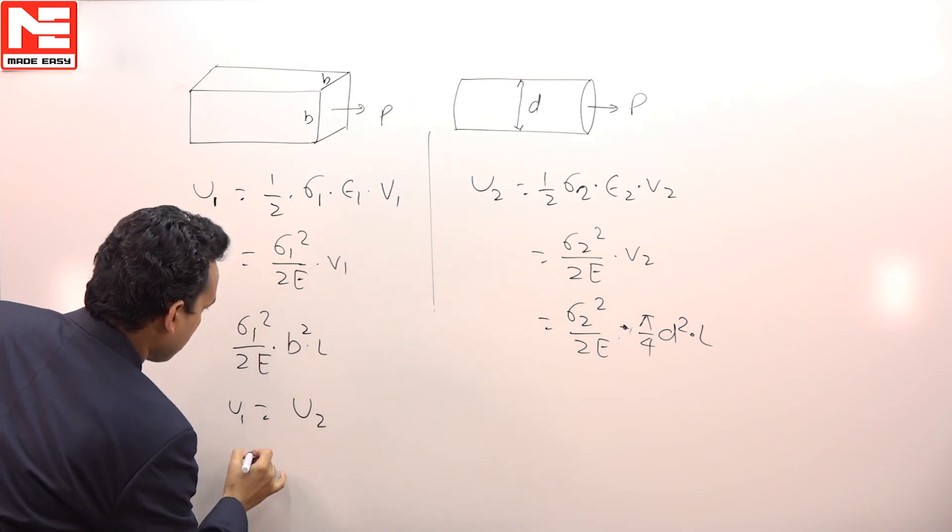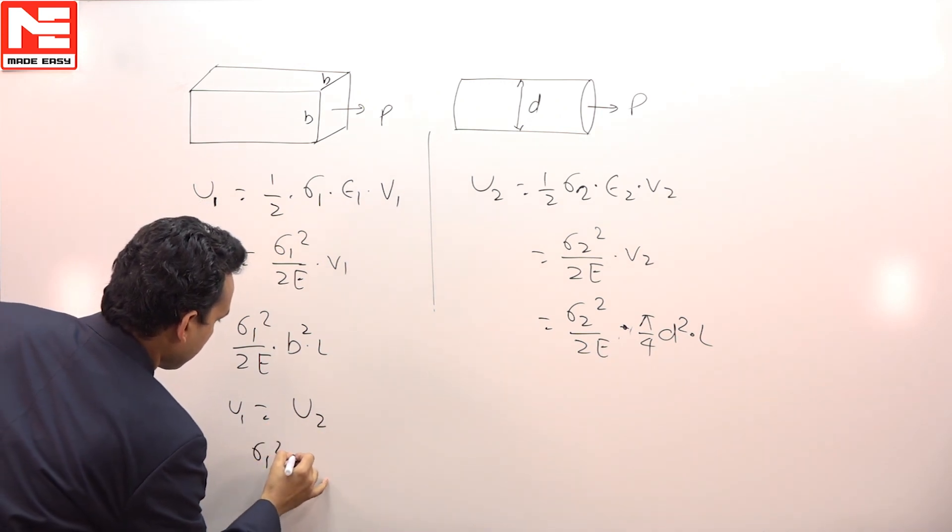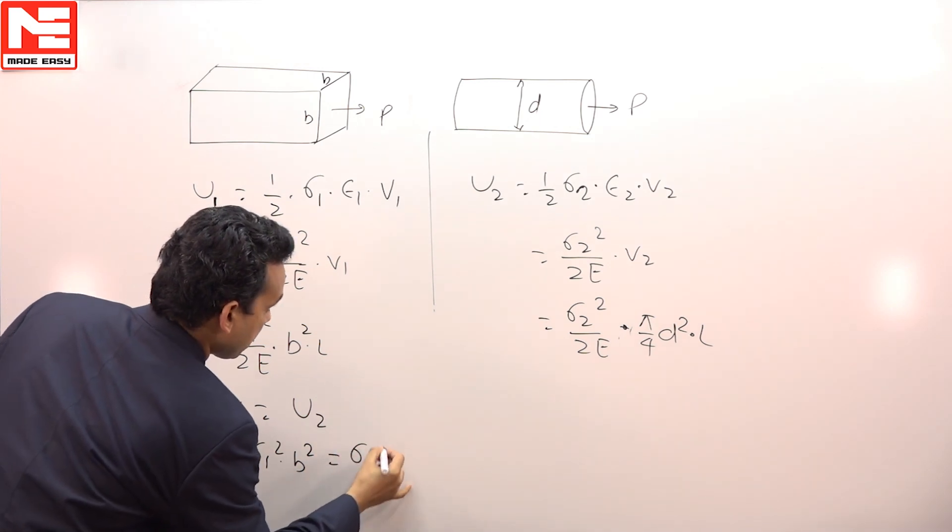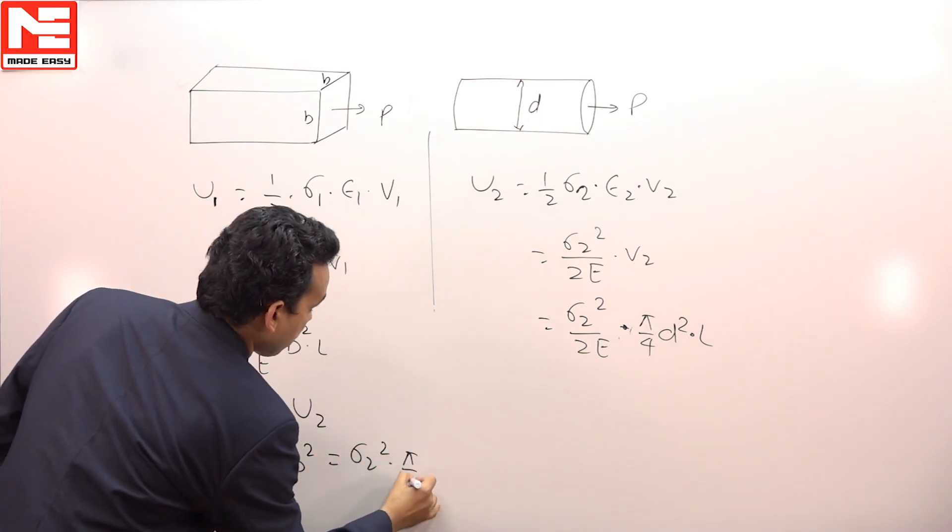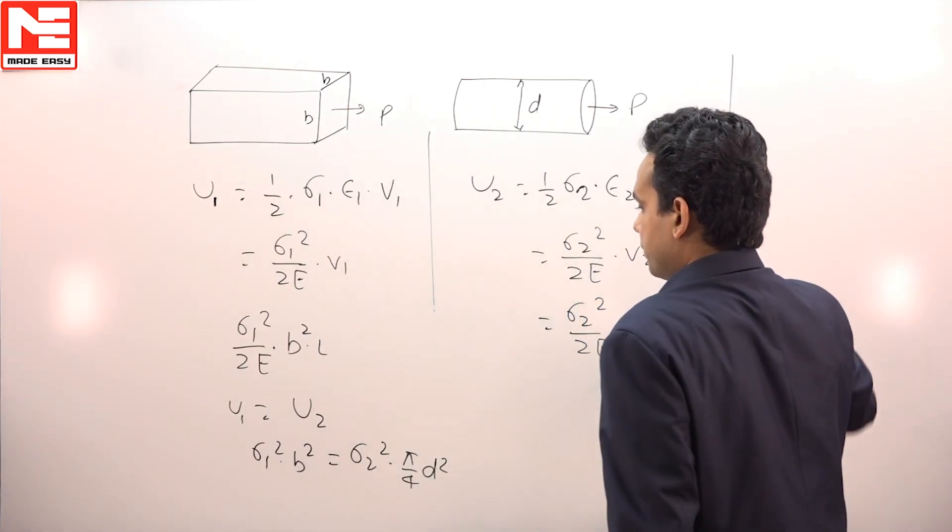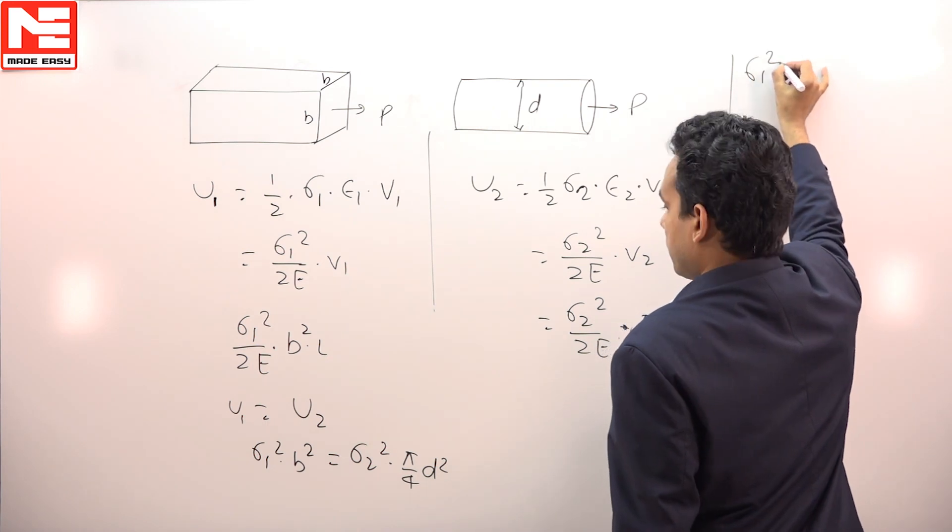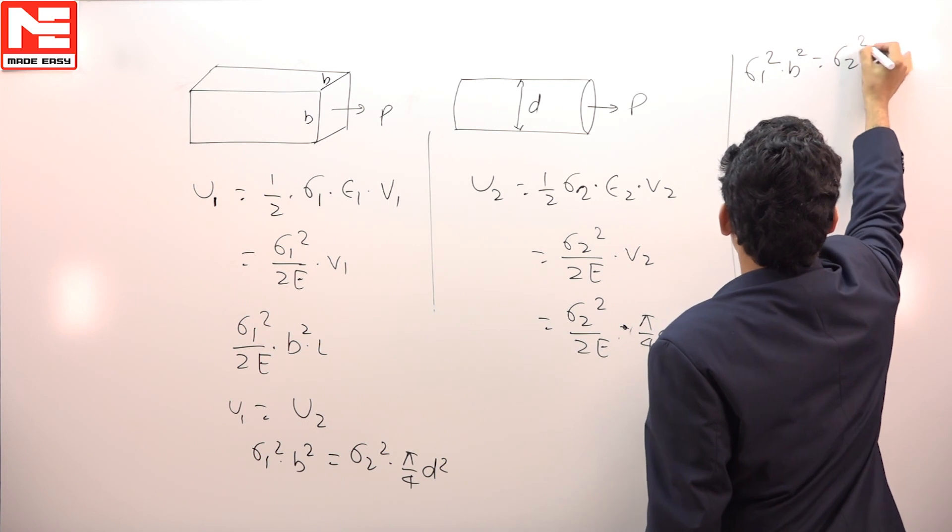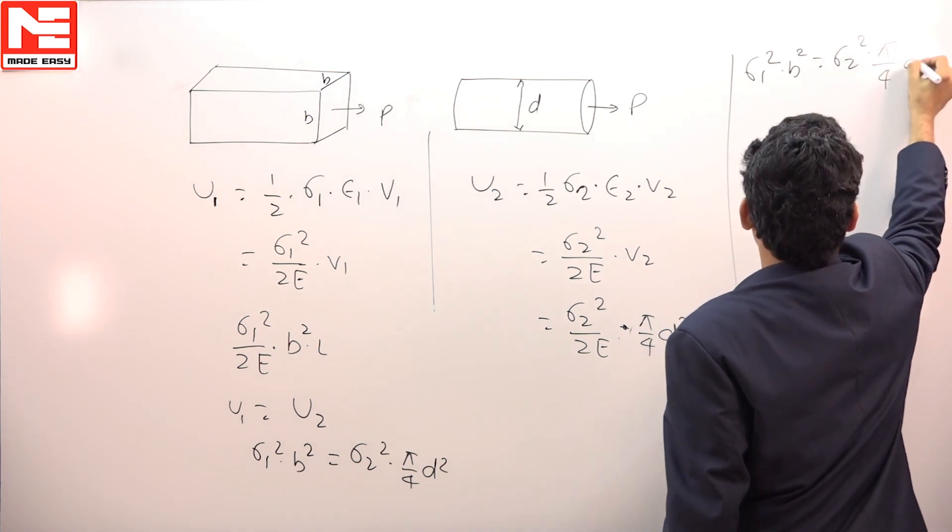Means you have to write σ₁² × b². This would be equal to σ₂² × π/4 × d². Now from here we can write σ₁² × b² is equal to σ₂² × π/4 × d².